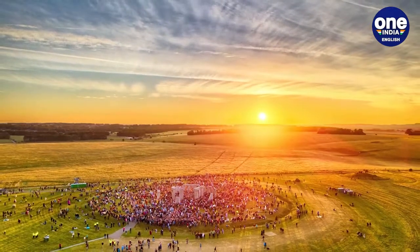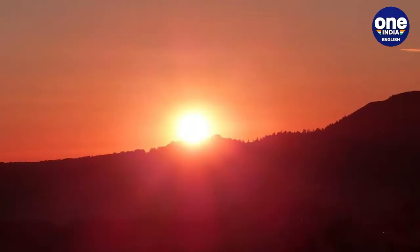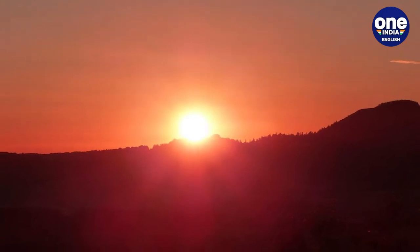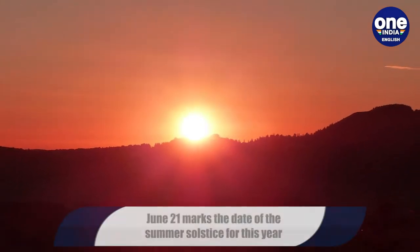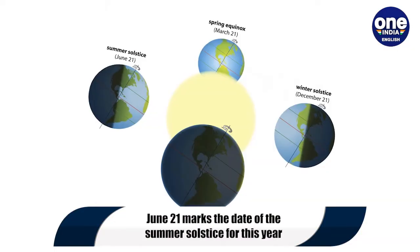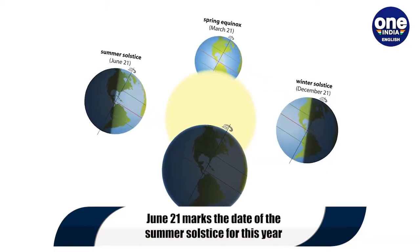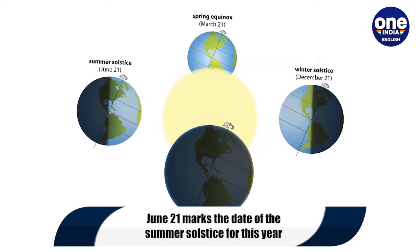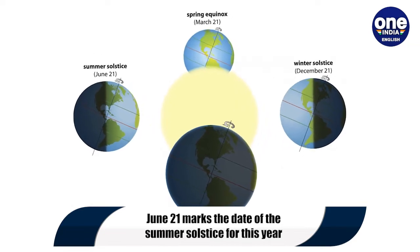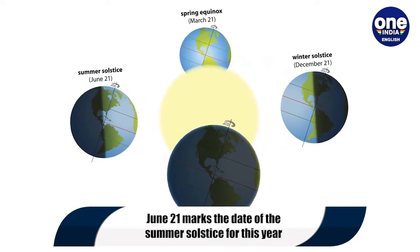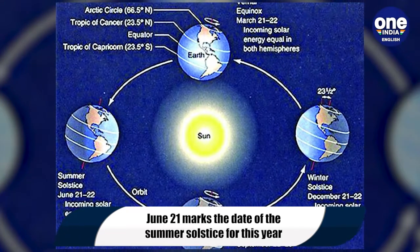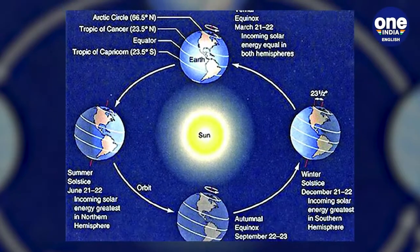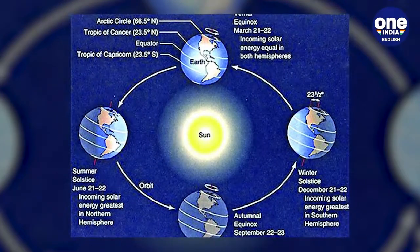June 21st marks the date of the summer solstice this year. For those living in North America, the astronomical event occurs on June 20th, while for the rest it typically occurs on June 21st. As per Indian Standard Time, it will take place today at 2:43 PM.